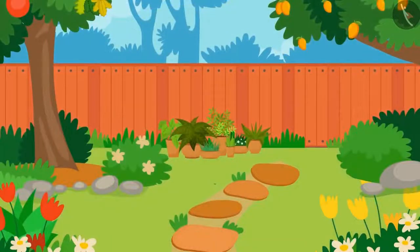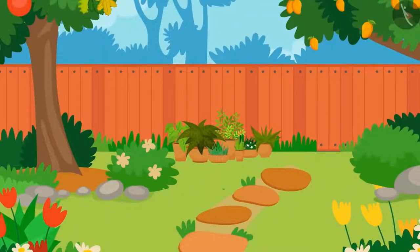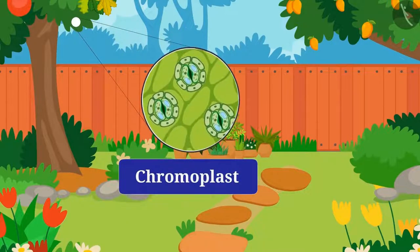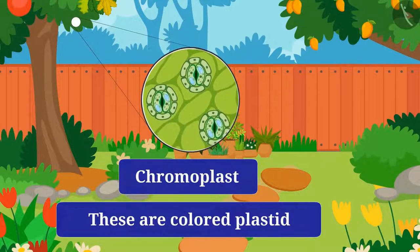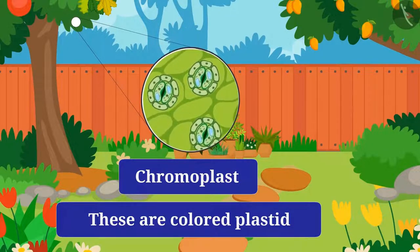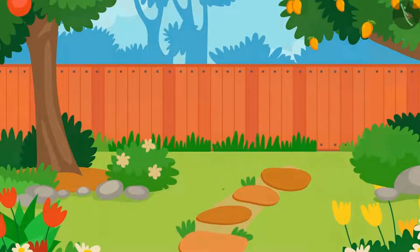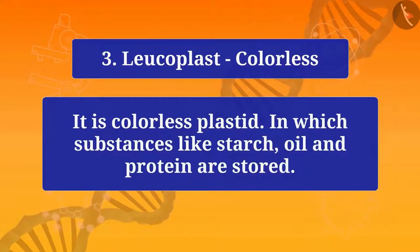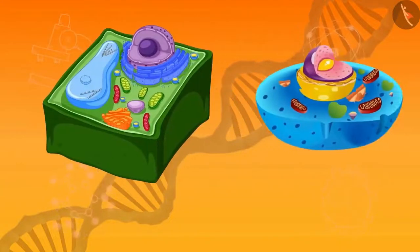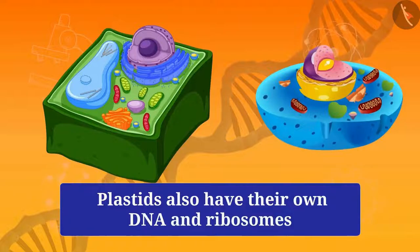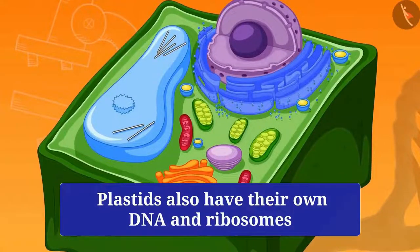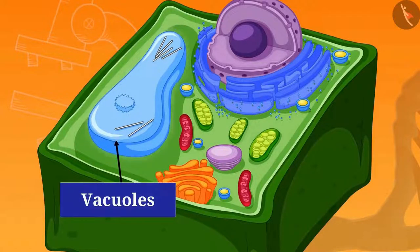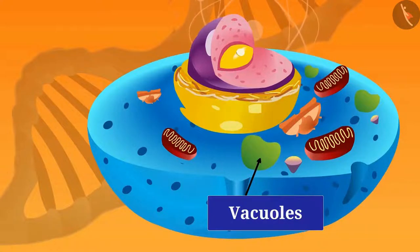Chromoplasts are colored plastics that provide different colors in leaves, flowers, and fruits. Leucoplasts are colorless plastids in which substances like starch, oil, and protein are stored. Plastids also have their own DNA and ribosomes, which help in synthesis of protein and lipids.